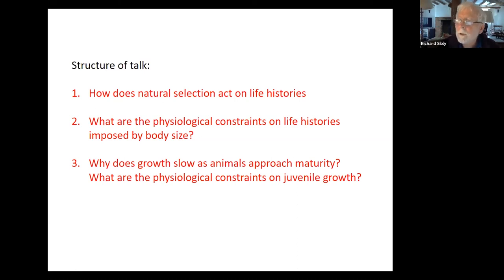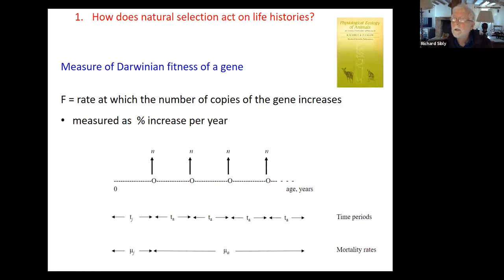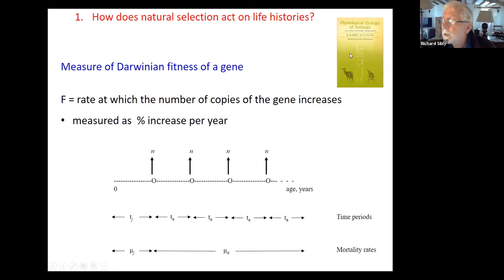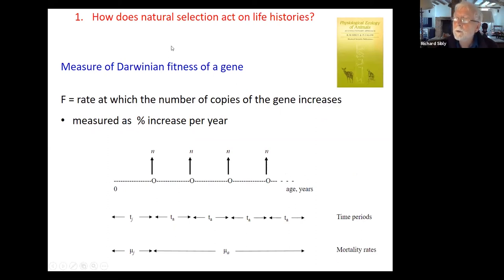We'll start off with natural selection. This is work I did way back with Peter Kaler. We put it together in a book in 1986, largely Peter's instigation — Peter wrote most of the book. The heart of all this is, if you're talking about natural selection, you want to know how natural selection acts, and you need to be able to measure, at least in principle, the Darwinian fitness of a gene.